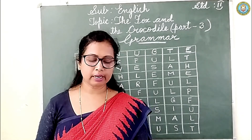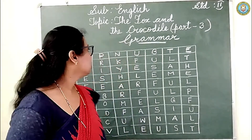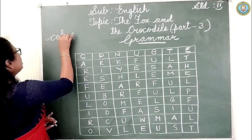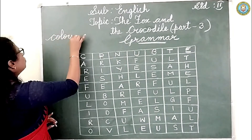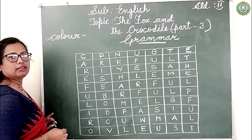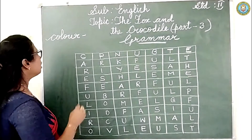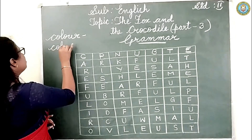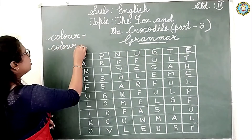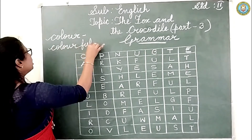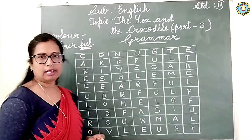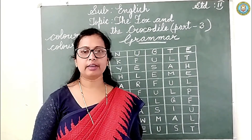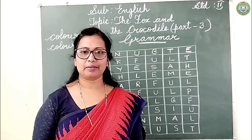For example: 'colour' — C-O-L-O-U-R. Add F-U-L at the end and it becomes 'colorful.' Same way, 'fear' — add F-U-L — becomes 'fearful.'